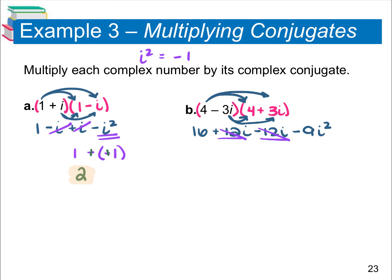Your like terms combine and cancel out since they are opposites, so that 12i minus 12i is just 0. You're going to have 16 minus 9i squared. That i squared is negative 1, so we're going to multiply that negative 9 by negative 1. A negative times a negative is a positive, so that's just 16 plus 9, which gives us 25.